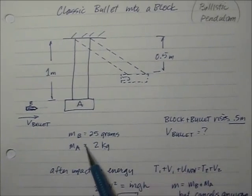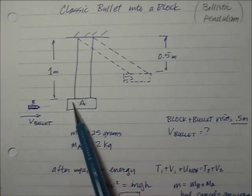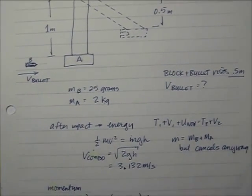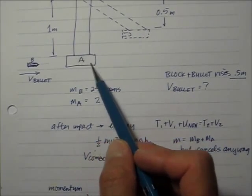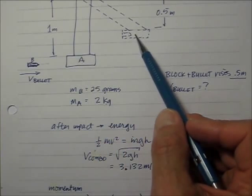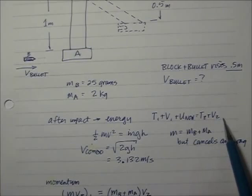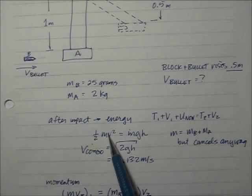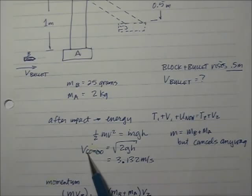The mass of the bullet is 25 grams and the mass of the block is 2 kilograms. The pendulum hangs 1 meter from the top and rises to a height of 0.5 meters. Starting with energy: (1/2)mv² of the block and bullet together equals mgh. The masses cancel, so the velocity of the combination is the square root of 2gh, which equals 3.132 meters per second.